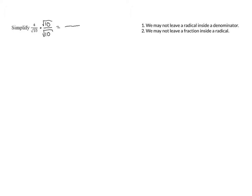In the denominator, if we have the square root of 10 times the square root of 10, we end up with the square root of 100, and we notice that 100 is a perfect square. That's really the goal — we need to multiply the bottom and the top by something so that when we multiply the bottoms, we end up with a perfect square. In the top, 4 times root 10 is just 4 root 10. Now we can evaluate that radical in the bottom: the square root of 100 is 10, so we end up with 4 root 10 over 10.